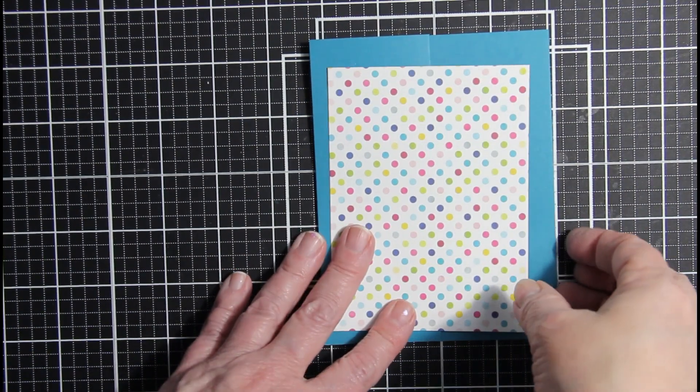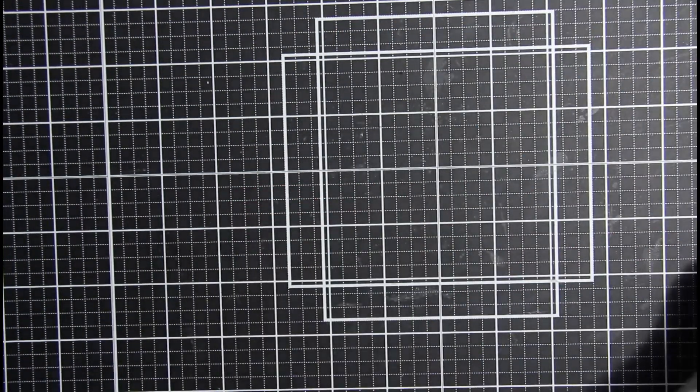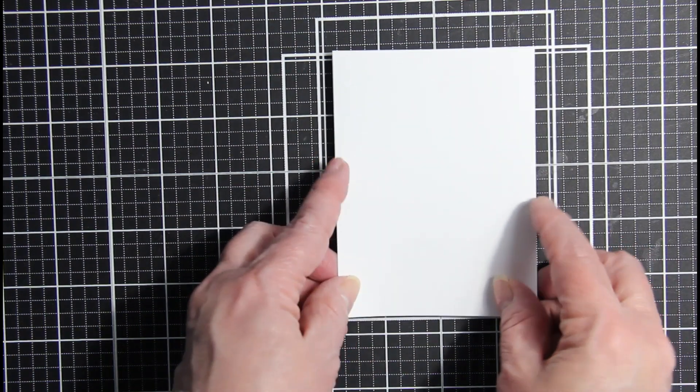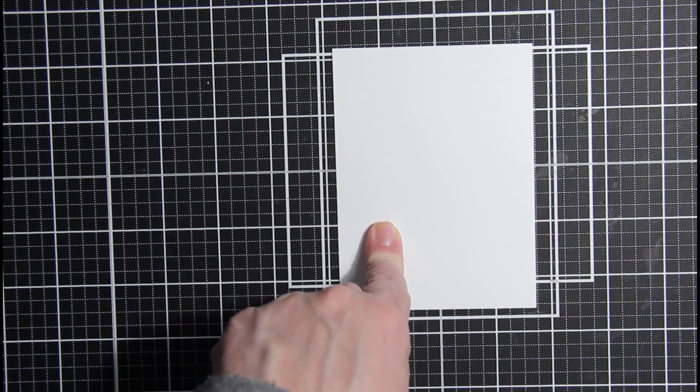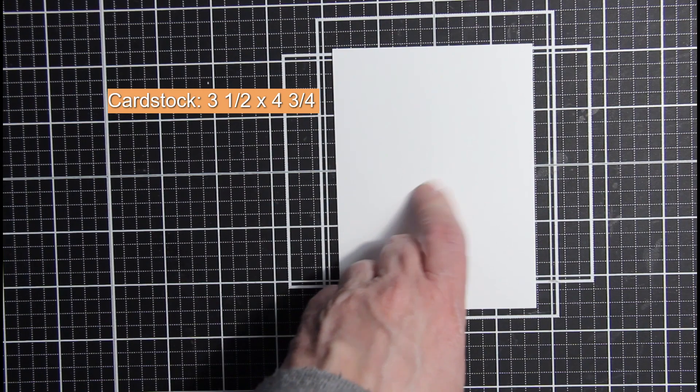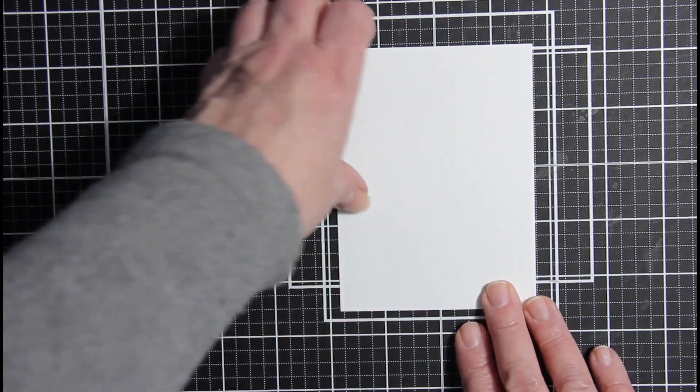I'm going to set these to the side. And I have also cut a white sheet of cardstock at 3 1⁄2 by 4 3⁄4. And I'm going to set this aside.